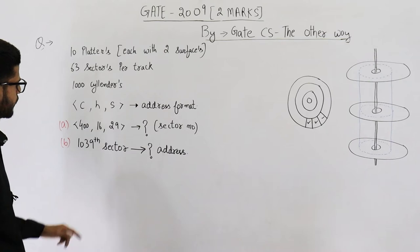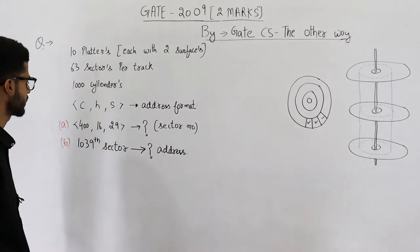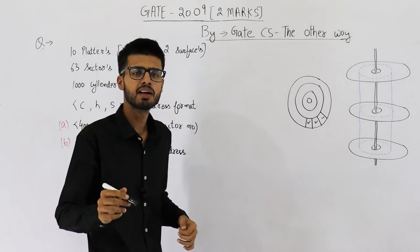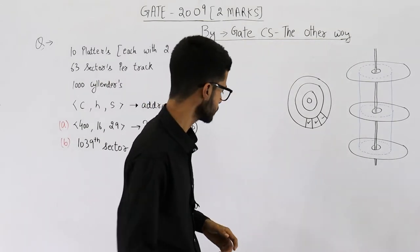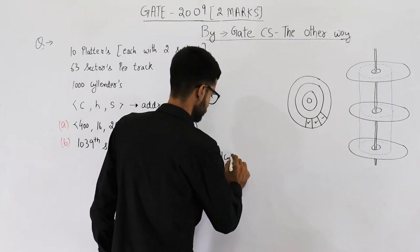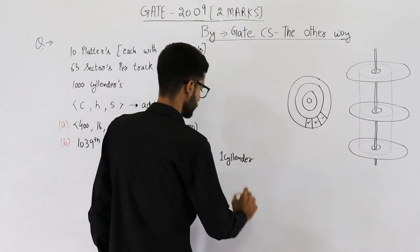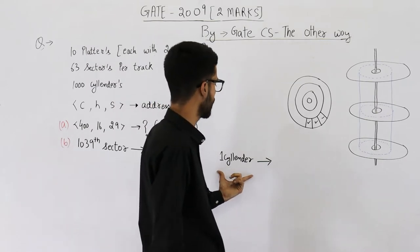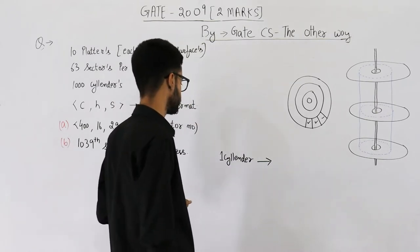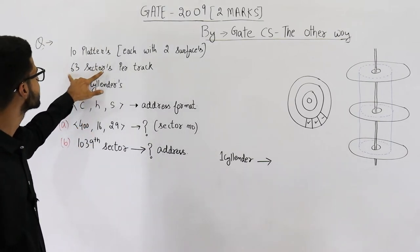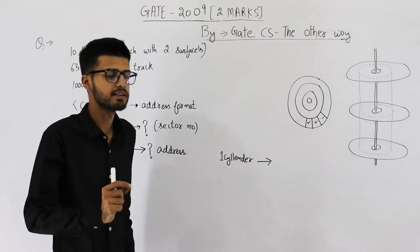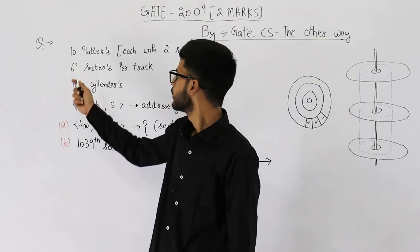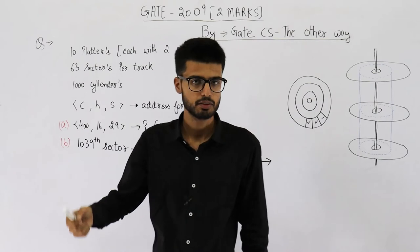Now let's find what sector number this address corresponds to — it is 400,16,29. First, let's find how many sectors are in one cylinder. One cylinder will contain 63 into 20 sectors. There are a total of 20 recording surfaces — 10 platters into 2 surfaces each — so 20 surfaces.